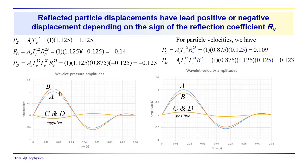The important takeaway from these plots is the sign of the peak in the wavelet as it's reflected or transmitted through a boundary. For the pressure wave disturbance, the transmission coefficient is 1.125, giving us the pressure at point B. The reflection coefficient between layers 2 and 3 is negative, which produces a drop in pressure on the wave going upward from the second interface. We can see that drop in pressure continues in the upward direction. The two-way transmission losses combined with the reflection coefficient between layers 2 and 3 give us a minus 0.123 amplitude for the pressure at point D.